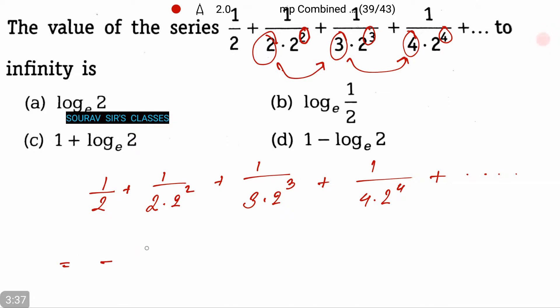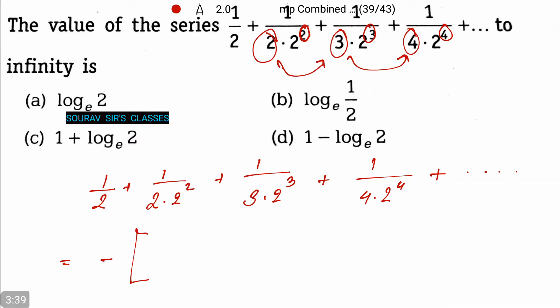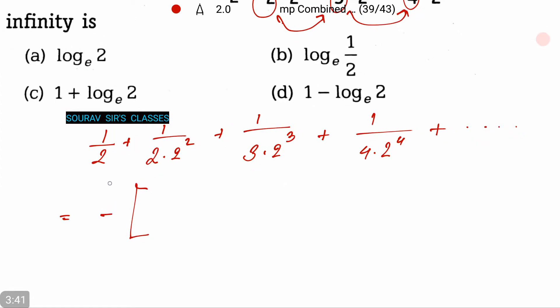And this can be written as—note how I write this—we put a minus sign on the outside and write: -(1/2) - (1/2)²/2 - (1/2)³/3 - (1/2)⁴/4 - ... up to infinity.